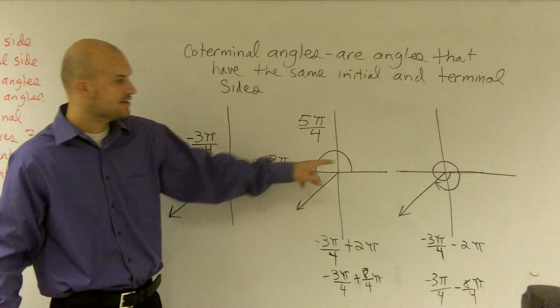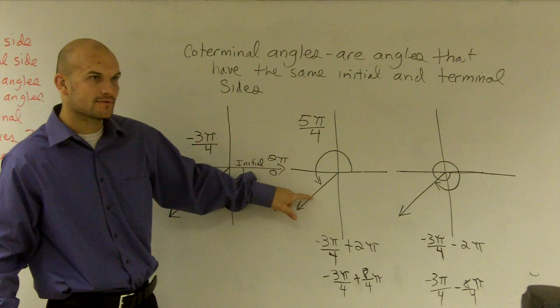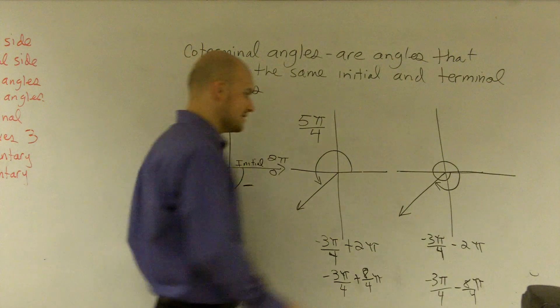Because over here to here, 1π over 4, 2π, 3π, 4π, 5π. Right? 6π, 7π, 8π.